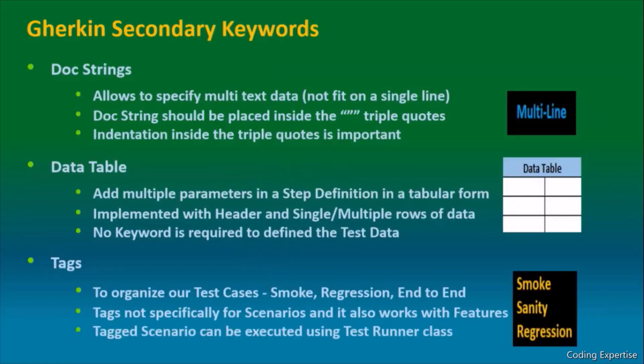Let's move on to data table. Data table is used to perform data driven testing. The special thing inside the data table is we don't need to use any keyword. When we were talking about scenario outline, there we had used examples keyword. So no keyword is required inside data table. It adds multiple parameters in a step definition file in tabular form. It can be implemented with header or with single rows of data, or without header also, and we can have multiple rows of data. Let's see an example.